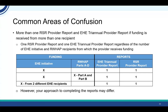Final area of confusion: providers will only ever have to do one RSR provider report and one EHE triannual provider report — it's always one and one. It doesn't matter if they receive only EHE initiative funding, EHE initiative funding and other Ryan White funding, or EHE initiative funding from more than one recipient. Your approach to completing the reports may differ, but not the number of reports.